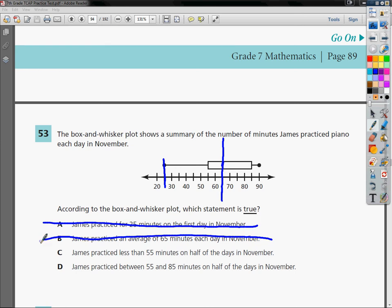It's different. C, James practiced less than 55 minutes on half the days in November. Here's 55. They're saying that this represents half. It certainly doesn't. This whole section from here to here, see how it's nice and big? There's distance here. That would be between quarter two and quarter four, so that's where a lot of this time happens. So no, he didn't practice less than 55 minutes on half the times. I don't even know where they came up with that.